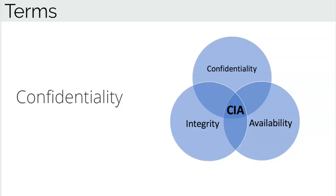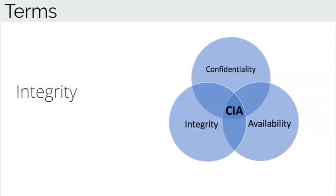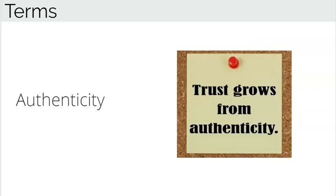Integrity is the third term — it is a property that ensures data has not been altered in an unauthorized manner since it was created, transmitted, or stored. The fourth term is Availability, which ensures timely and authorized access and use of information or a service. Authenticity is the fifth term, which is the property of being genuine and being able to be verified and trusted.